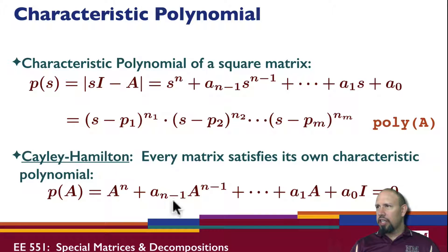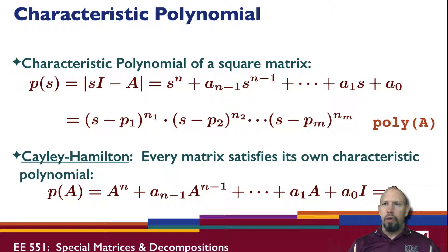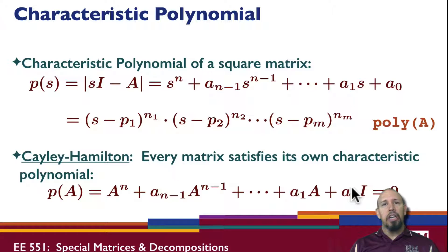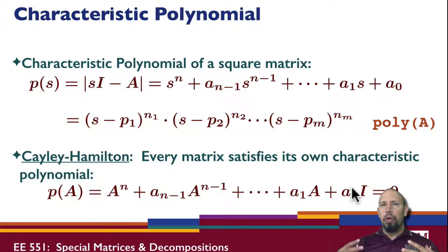Any matrix to the power 0 is the identity matrix. The Cayley-Hamilton theorem says that if I plug A in, I get zero. So this has some significant implications when it comes to matrices.